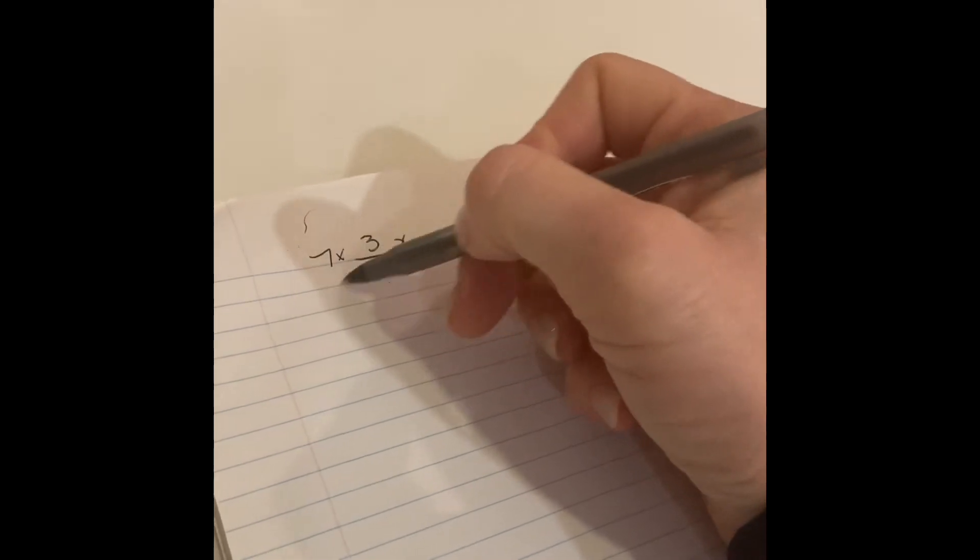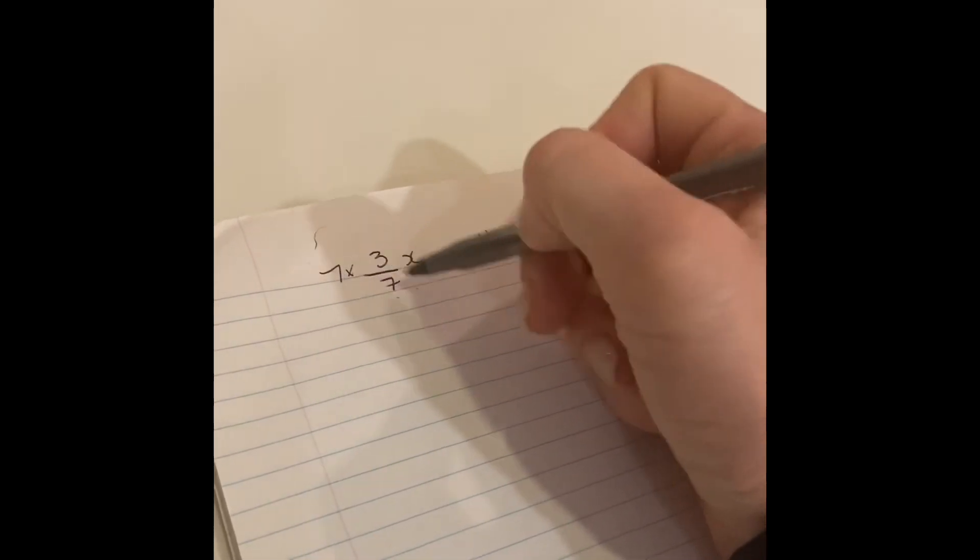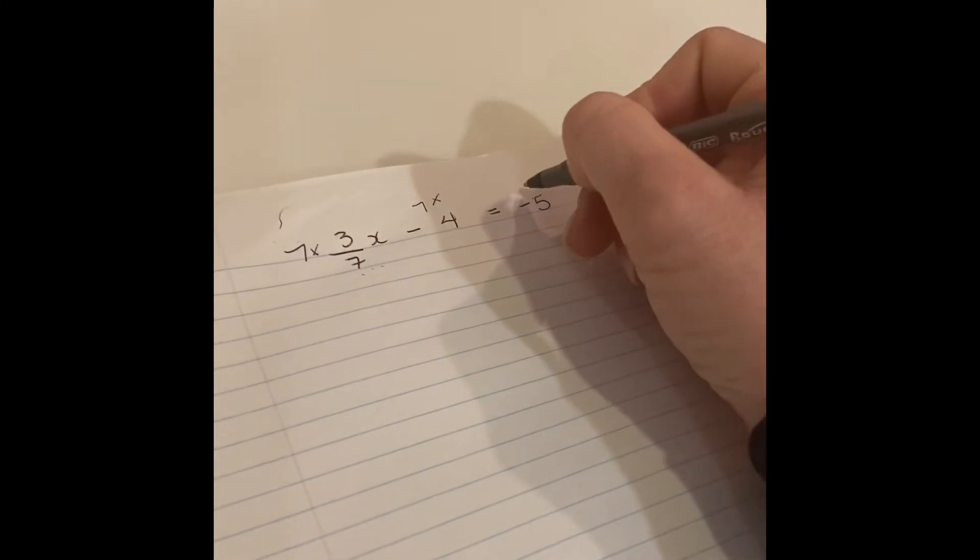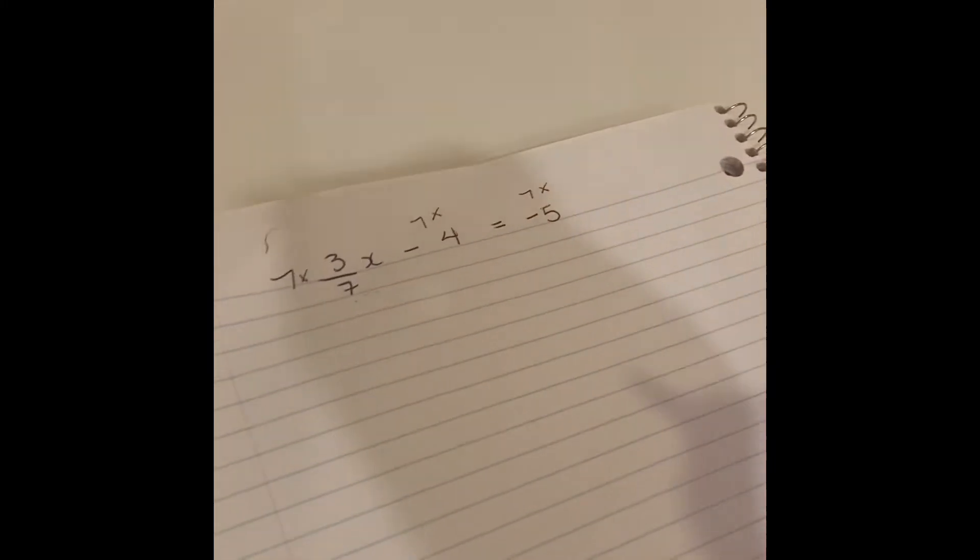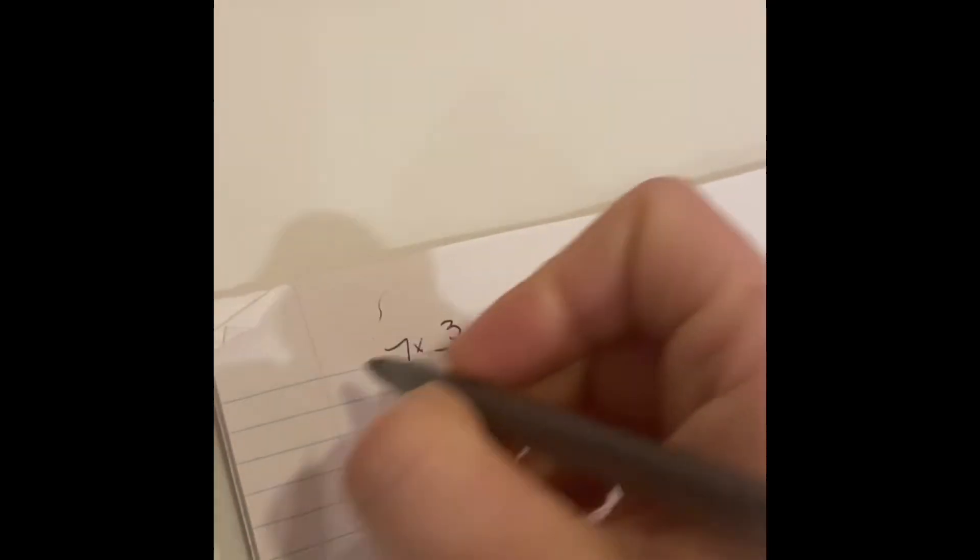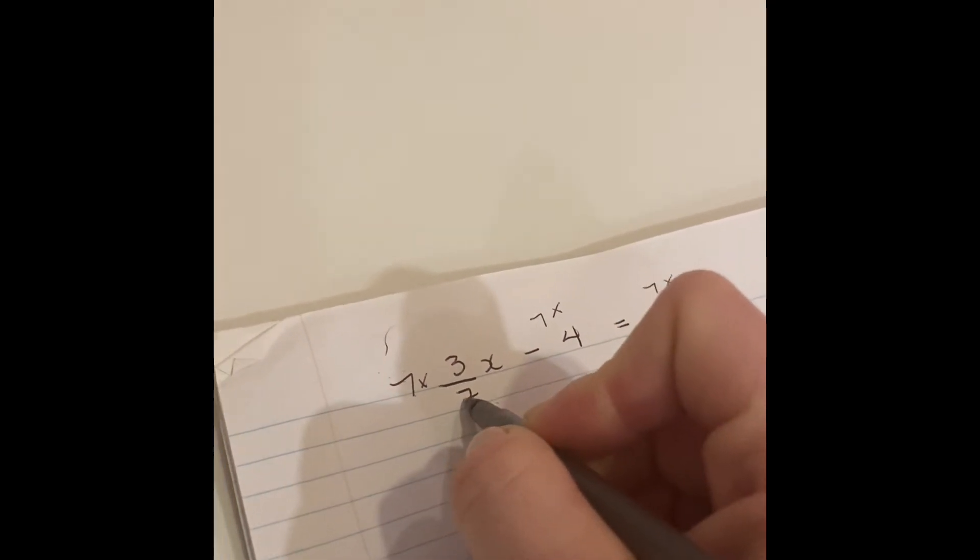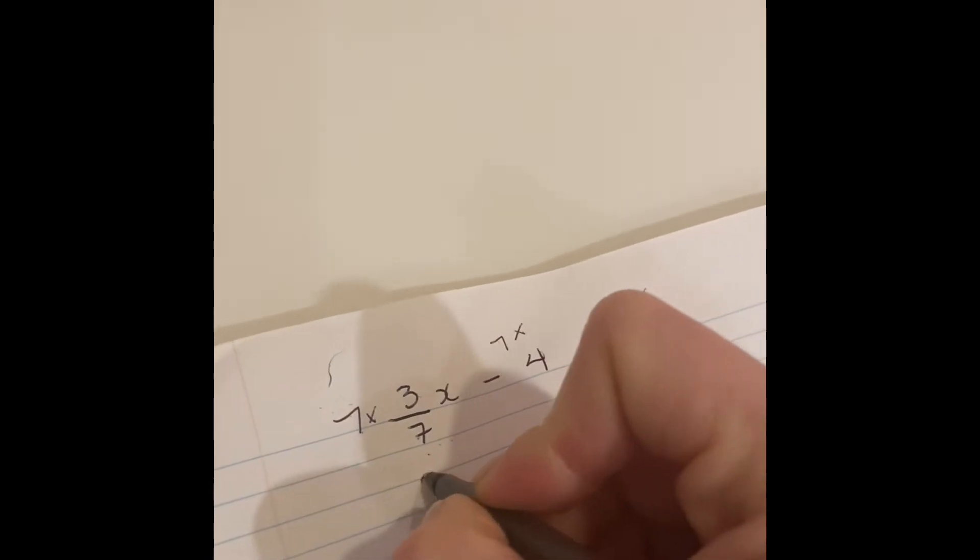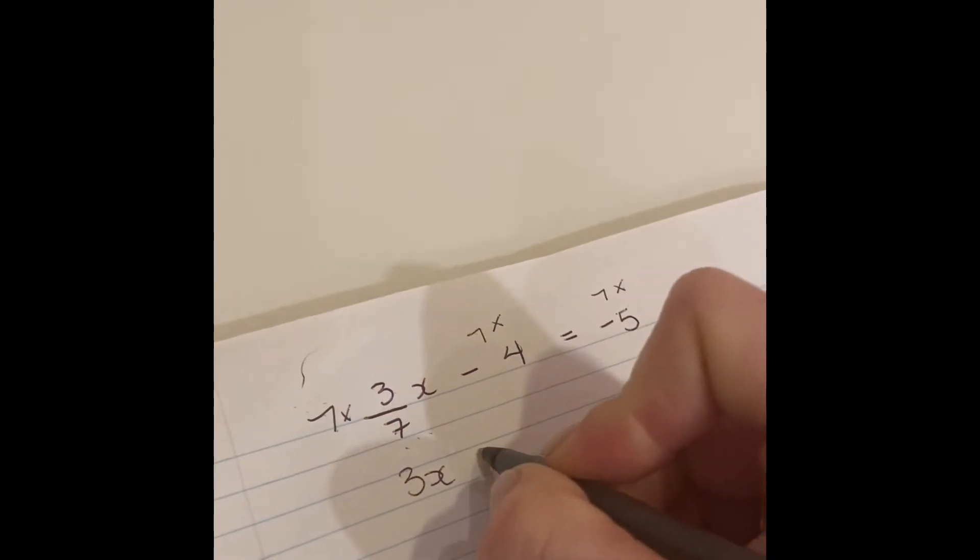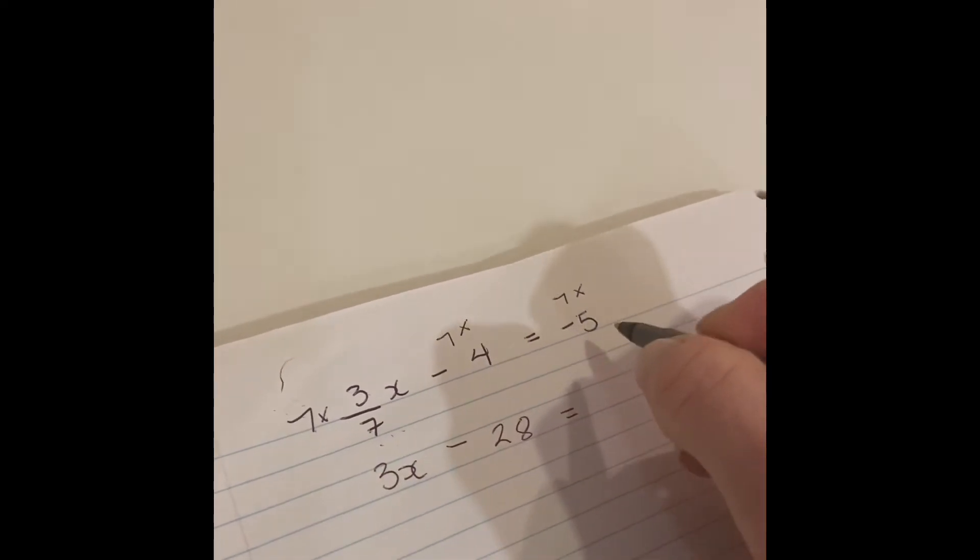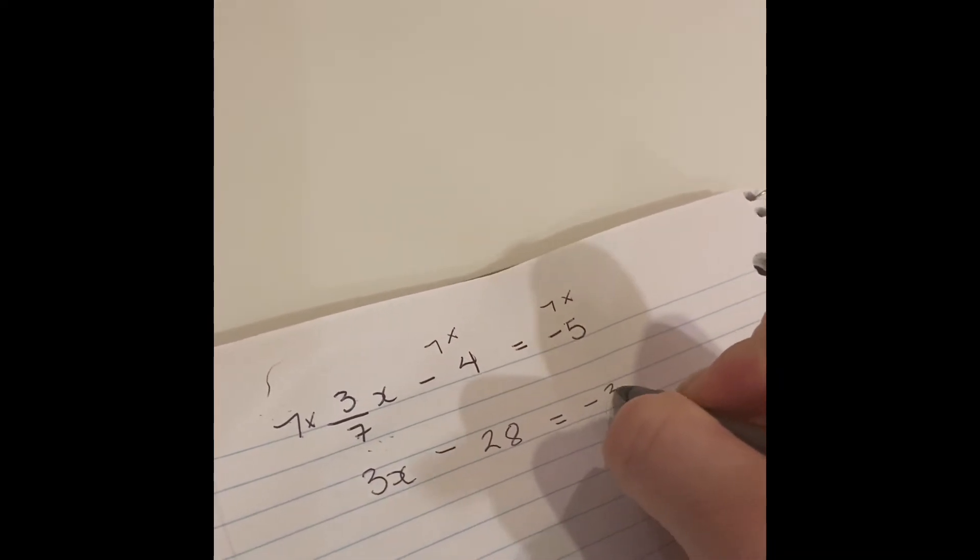So if I multiply this by 7, I need to multiply this part by 7 and I need to multiply this part by 7. Which means over here 7 times 3 is 21, 21 divided by 7 gives me 3, so I have 3x minus 7 times 4 is 28, and 7 times minus 5 is minus 35.